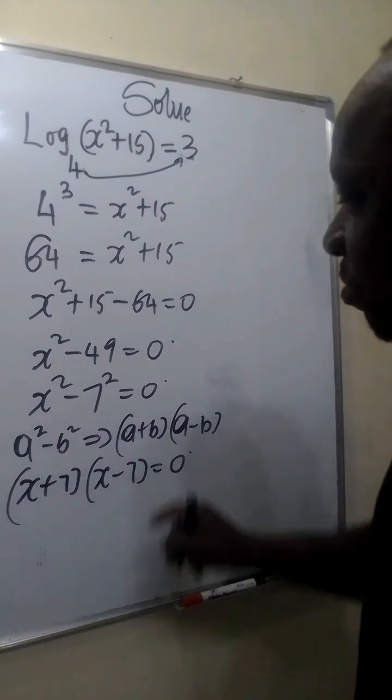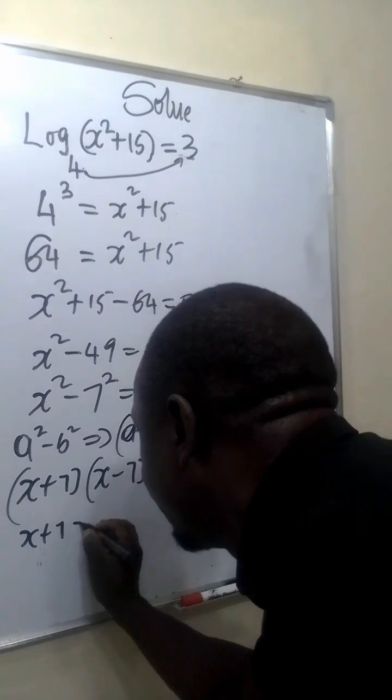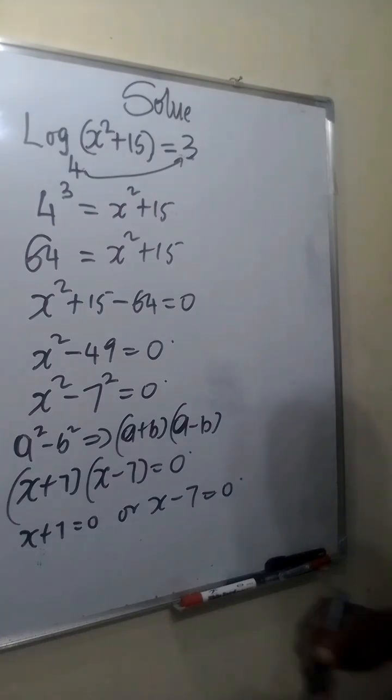For this times this to equal 0, it implies x plus 7 equals 0, or x minus 7 equals 0.